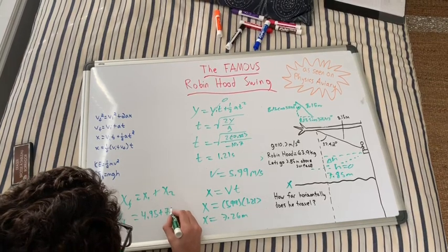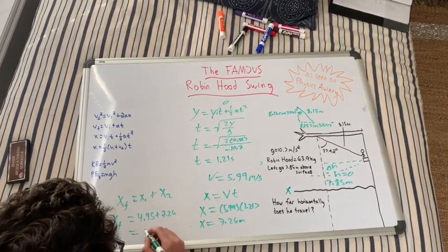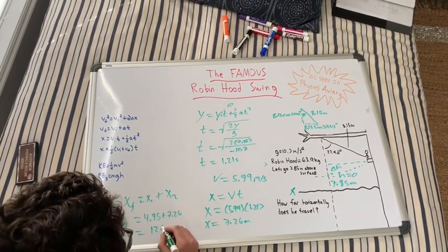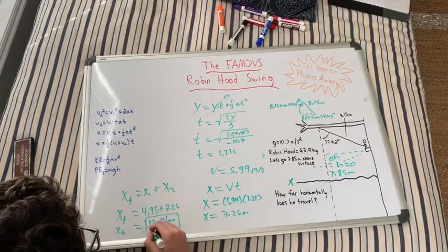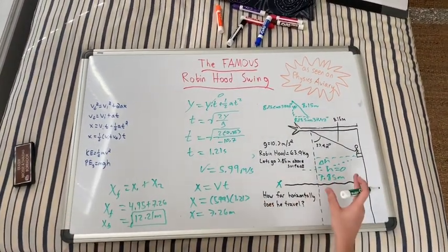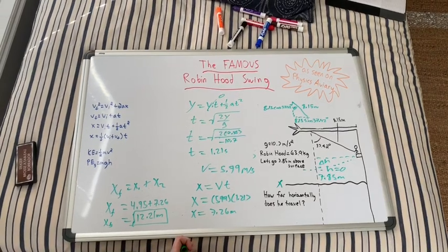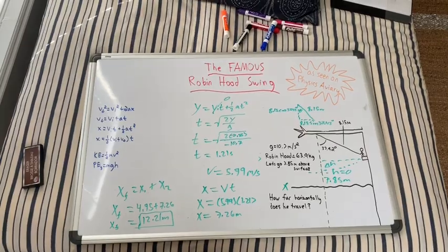And then we get our final answer which is 12.21 meters. There we go! So that's how you do the famous Robin Hood Swing problem. It's kind of long—it incorporates the energy and kinematics that we have learned into one problem. I'd recommend you guys try it out on Physics Aviary. Thanks for watching!